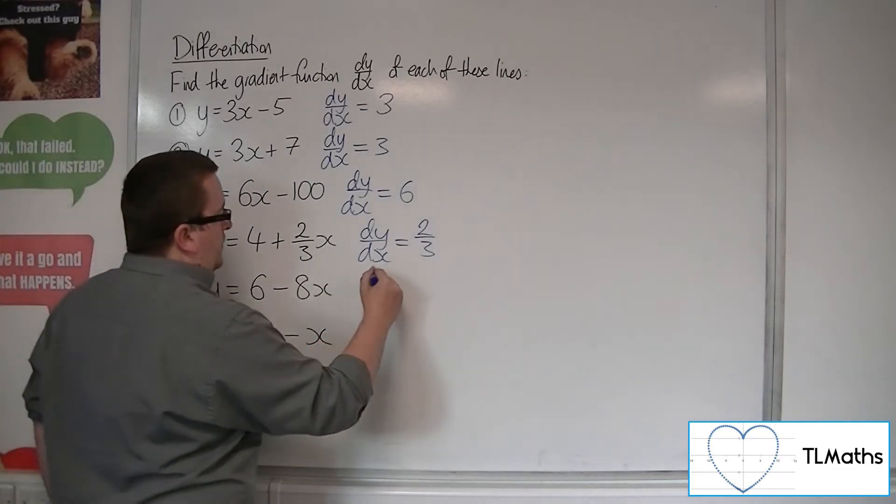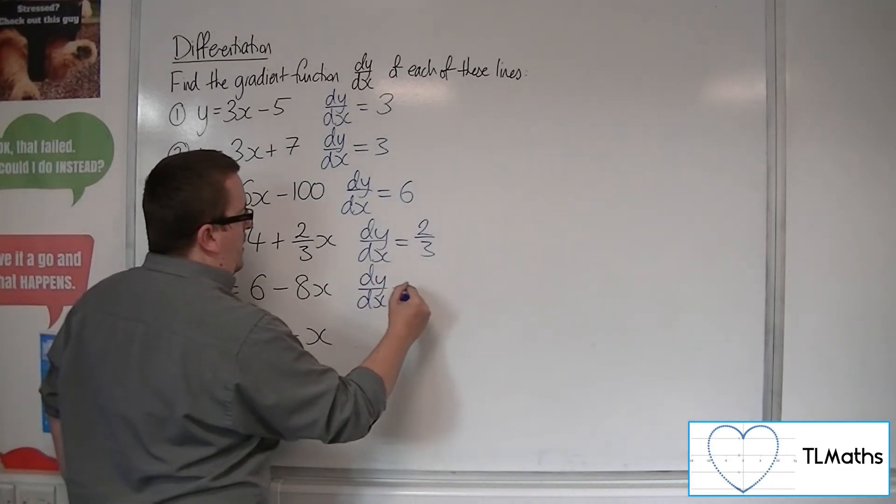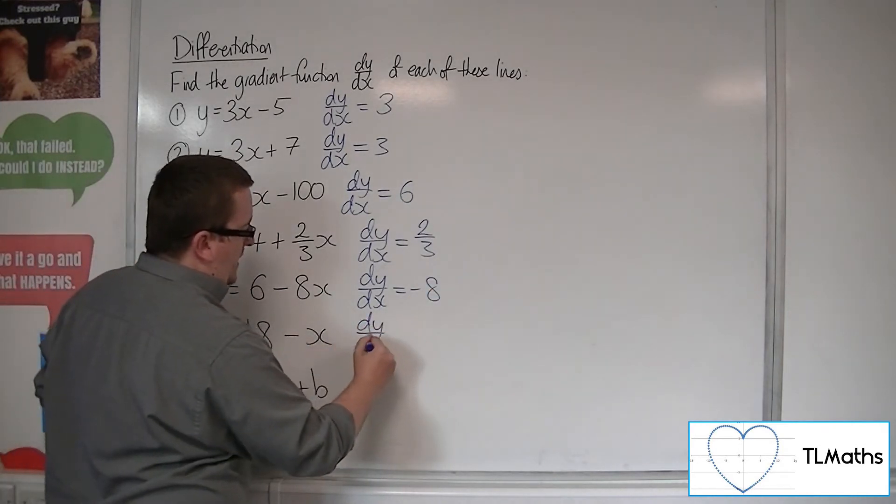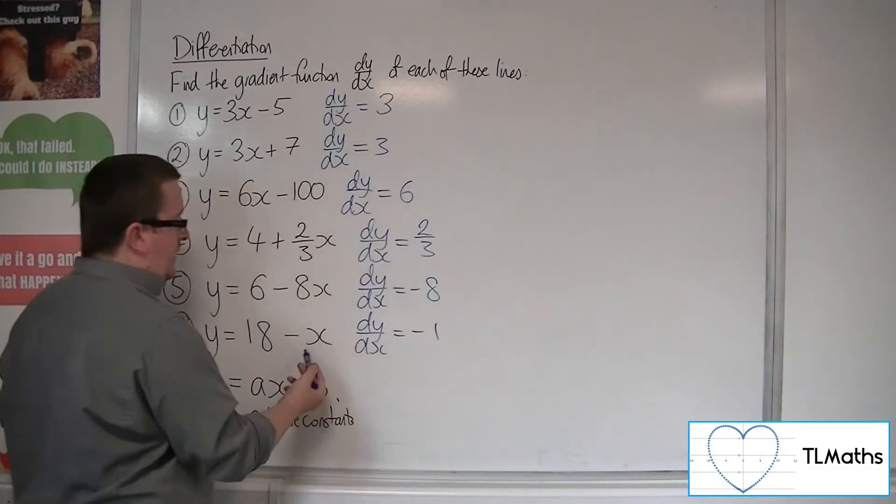Number 5, dy by dx will be minus 8. Number 6, dy by dx will be minus 1. The coefficient, the number that's in front of the x.